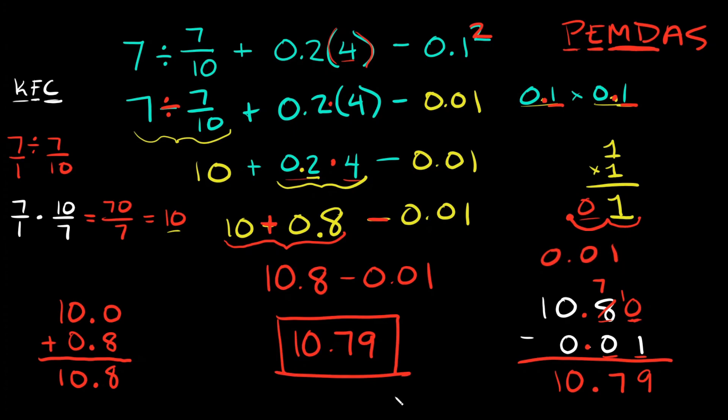Now you can breathe! That is how you simplify expressions that have both fractions and decimals in them using the order of operations. I hope the examples were helpful — if they were, definitely leave a thumbs up below. If you still have any questions or want to see other examples, let me know in the comments and I'll do my best to help. There's also a playlist at the end of the video, so check those out!